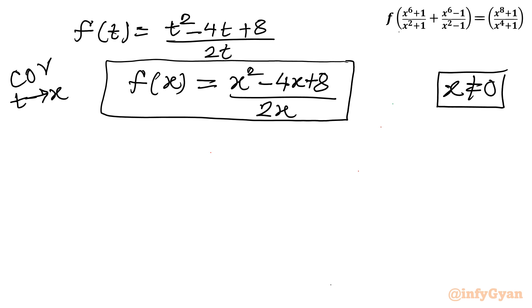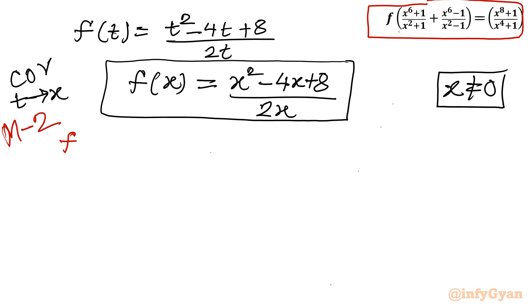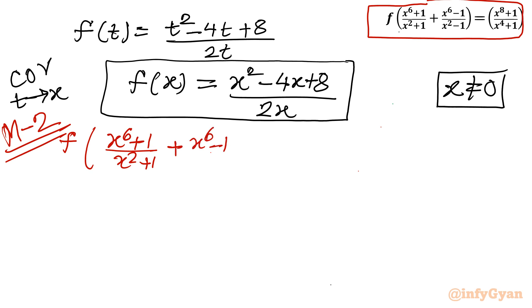Now Method 2 — the LCM method. I will write the LHS: f[(x⁶+1)/(x²+1) + (x⁶-1)/(x²-1)]. Let me simplify the bracket by taking the LCM: numerator is (x⁶+1)(x²-1) + (x⁶-1)(x²+1), and the denominator is (x²+1)(x²-1).